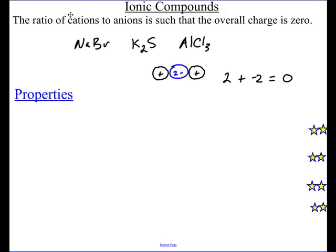What's the charge always on a sodium? It's a positive. What's the charge always on a bromine? Negative. So that's a neutral compound.